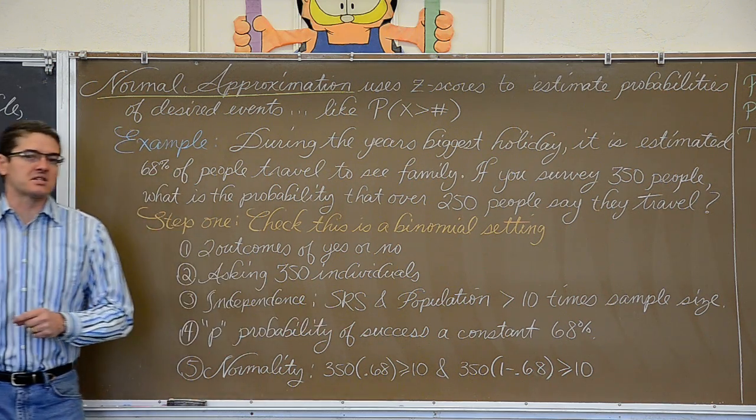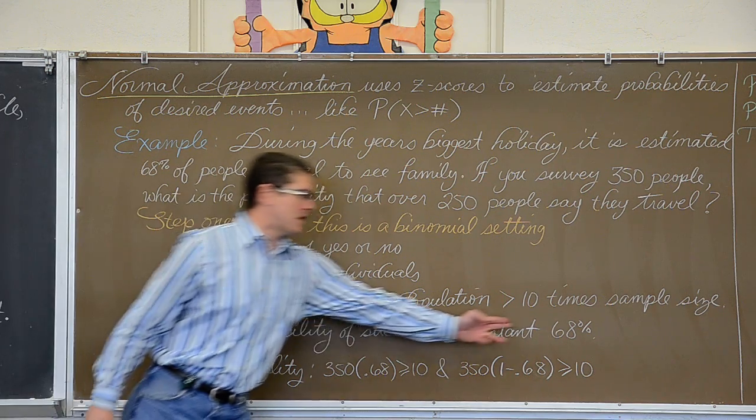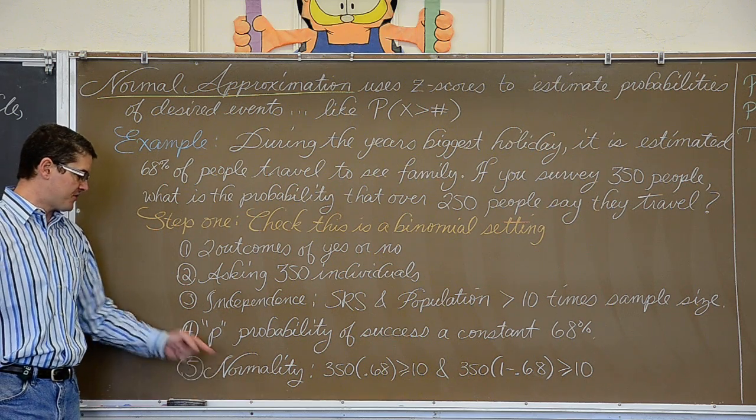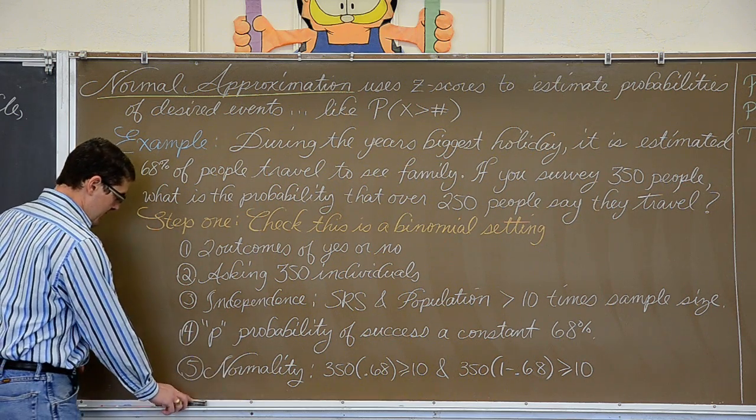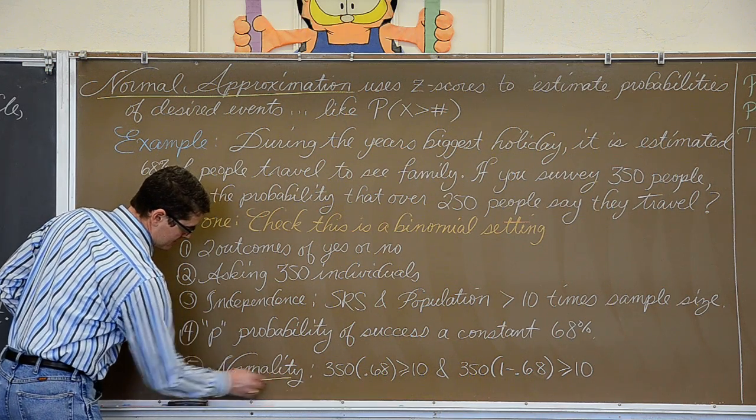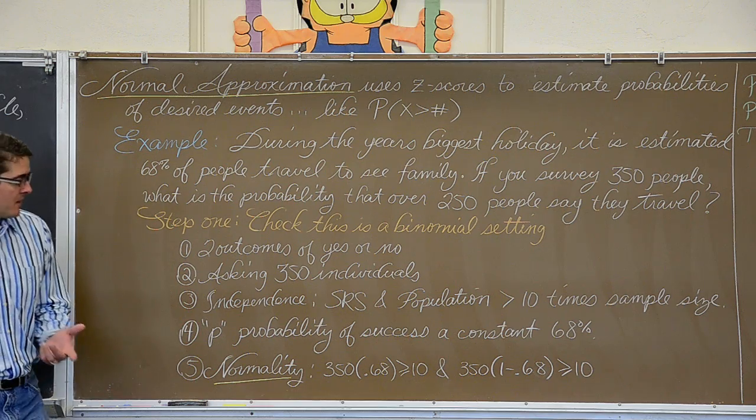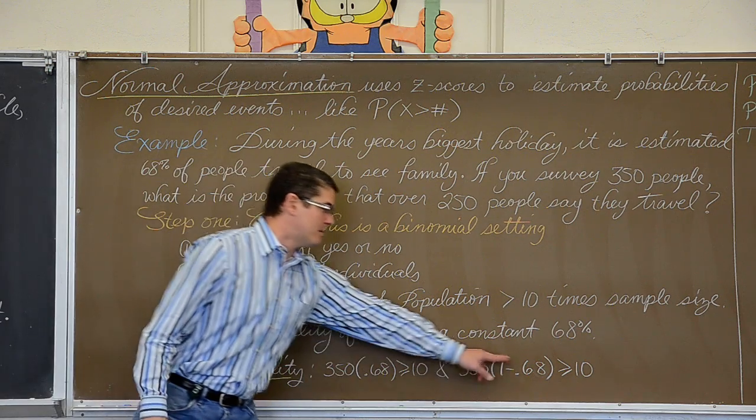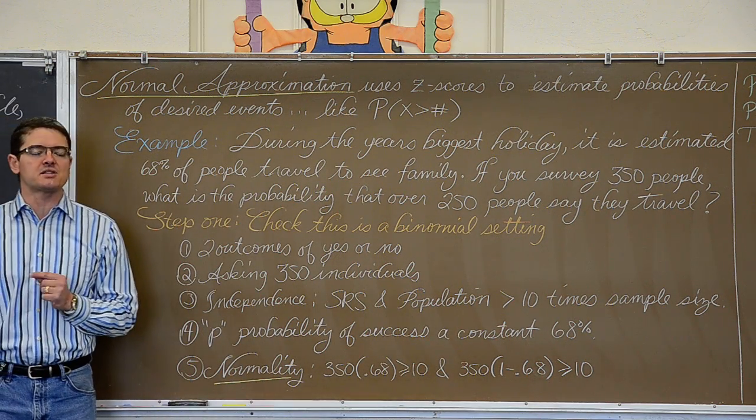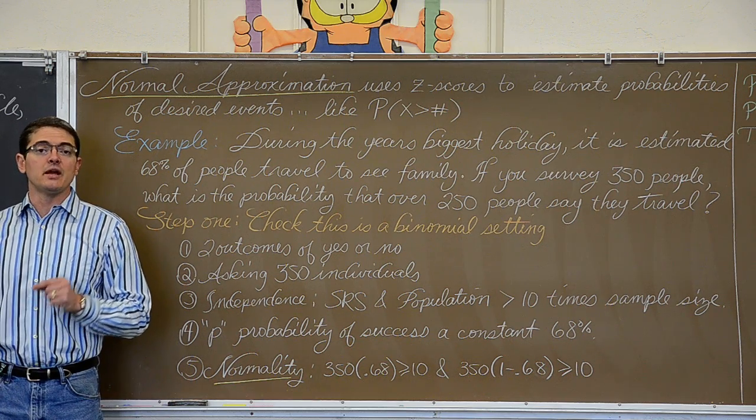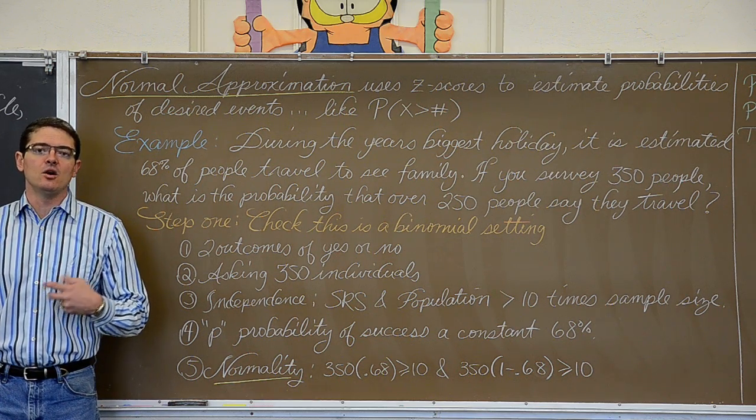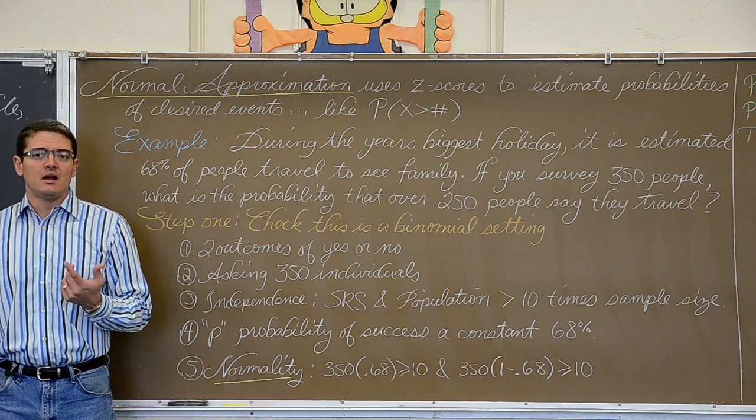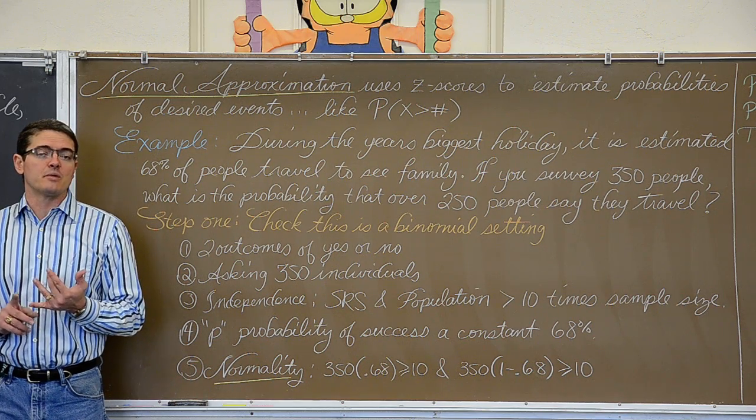All right, my probability of success is constant. It is going to be assumed to be a constant 68%. And this fifth check is not for the binomial setting, but this fifth check is for normality. And again, we cannot do normal approximation unless our distribution is actually normal. So that is n times p is greater than or equal to 10, and n times 1 minus p is also greater than or equal to 10. Both of those checks have to pass, otherwise your distribution is not normal and you will be forced to use binome pdf or binome cdf in your calculator. And that is not really such a bad option as long as you are working with binomial counts.